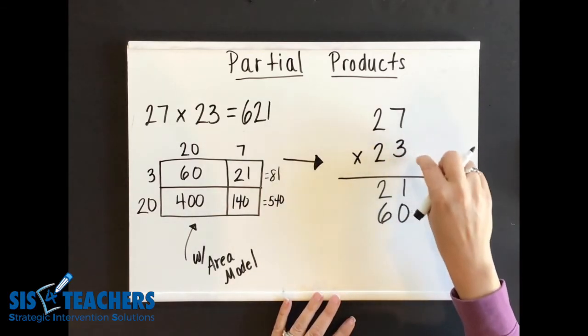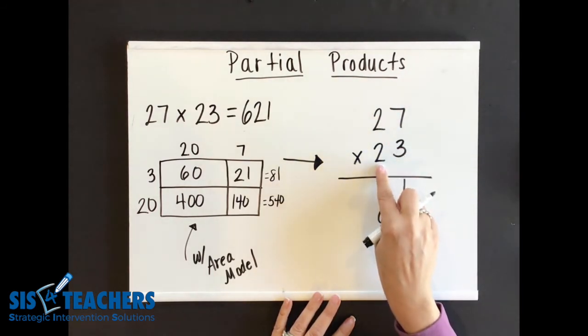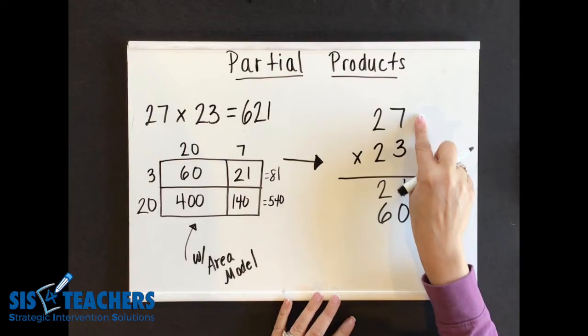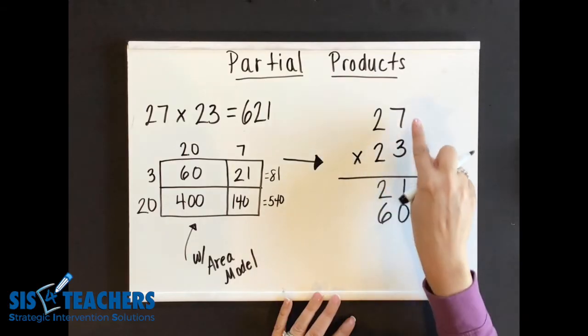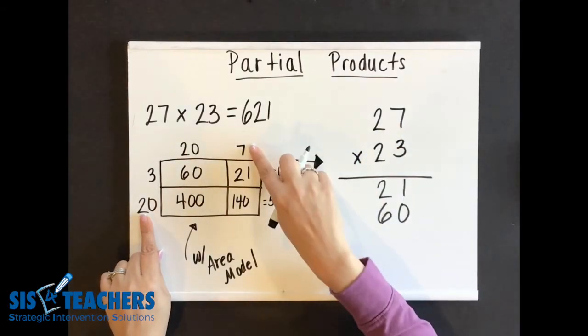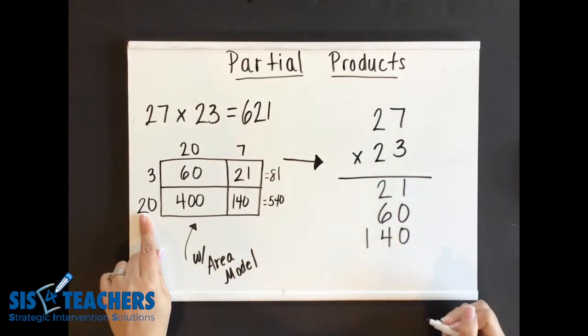So we've gone through and used our ones place with the ones place and the tens place. Now it's time to move over to the tens place and make sure we go into the ones and the tens. So now we don't want to say two times seven because what is that actually? Oh, it's 20 times seven.